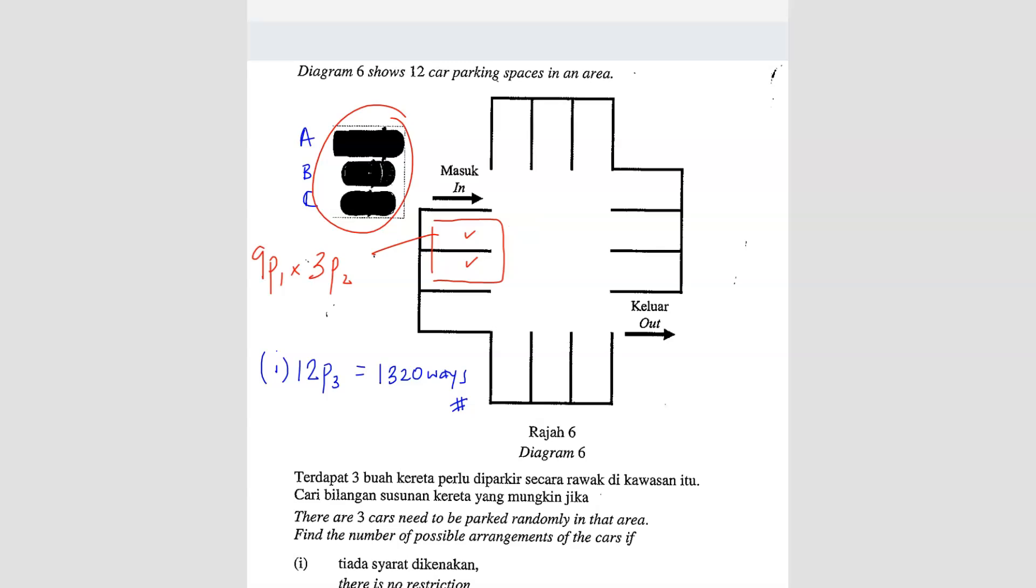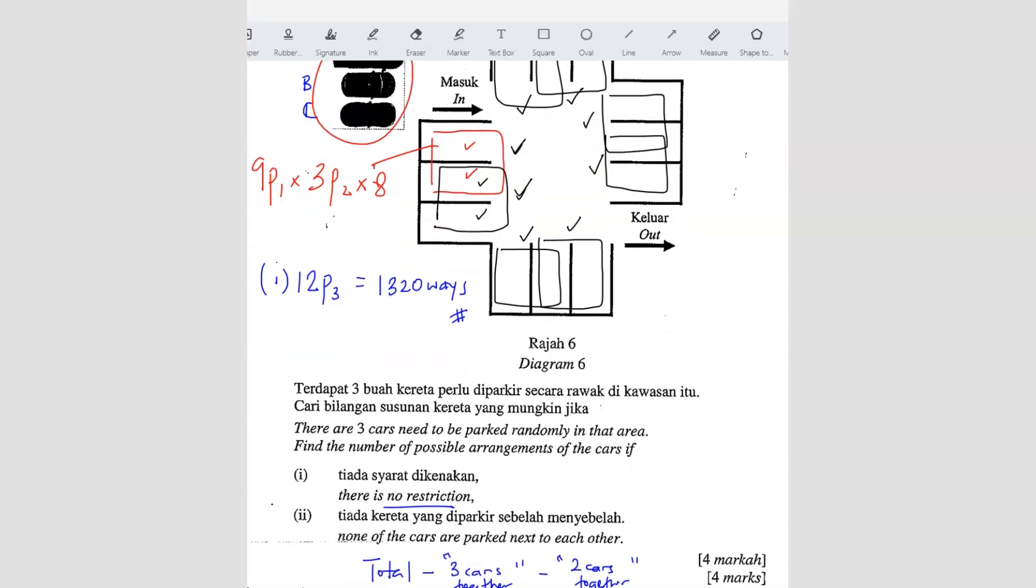But of course, the 2 cars, because now we are counting for 2 cars together, right? So the 2 cars don't necessarily have to be here. It can also be this side, these 2 slots. So there's another option. Here and here. They are still together. 2 cars next to each other. So here got 1st option, 2nd option. It can also be here. It can also be here. Can also be here. It can also be here. It can also be here. And it can also be here. So how many options are there? 1 option, 2 option, 3 option, 4 option, 5 option, 6 option, 7 option, 8 options. So that means you have to times 8. There are 8 different possible options. Clear?